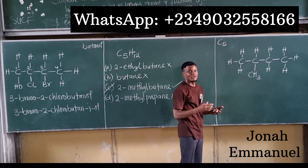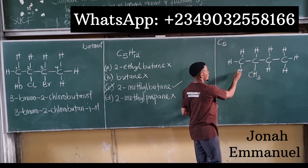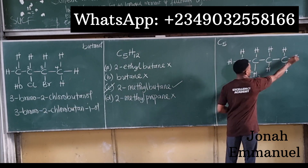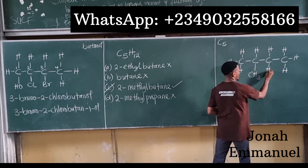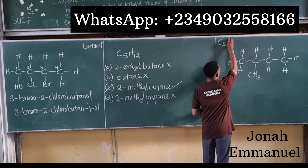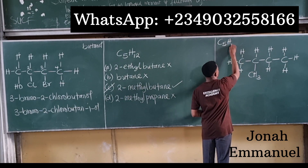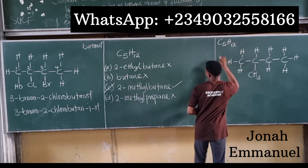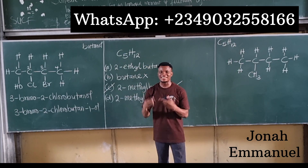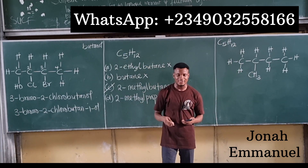Counting the hydrogens: 1 through 12 — that's H12. So the molecular formula is C5H12, which confirms 2-methylbutane is correct. This is how you can speedily get your answer.